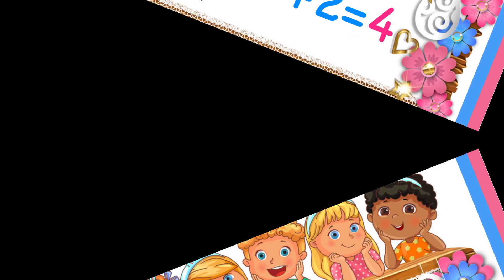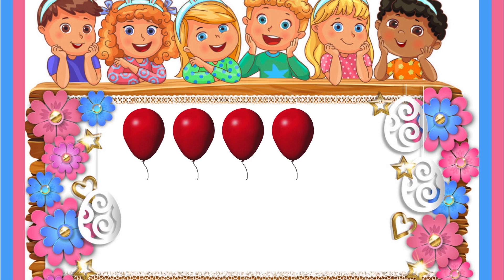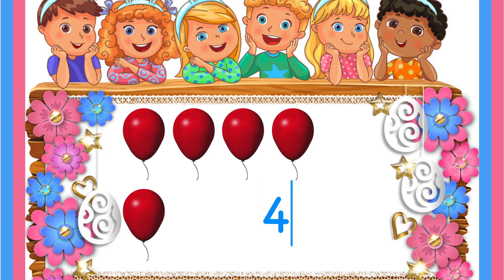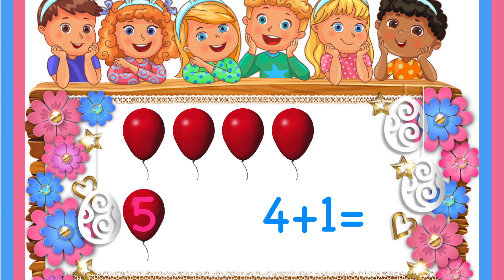Let's see the next one. You have one, two, three, four balloons and your mom gives you another one balloon. So here the addition you are going to do is four plus one, which means you have four balloons and you are going to add another one. Let's count how many total balloons there are with you: one, two, three, four, five. So the answer is five.